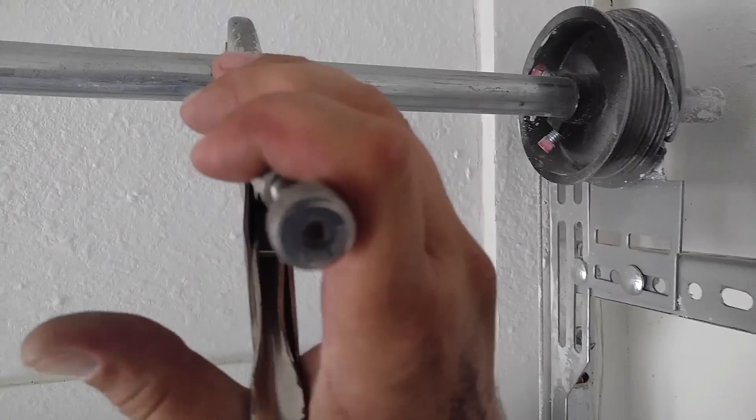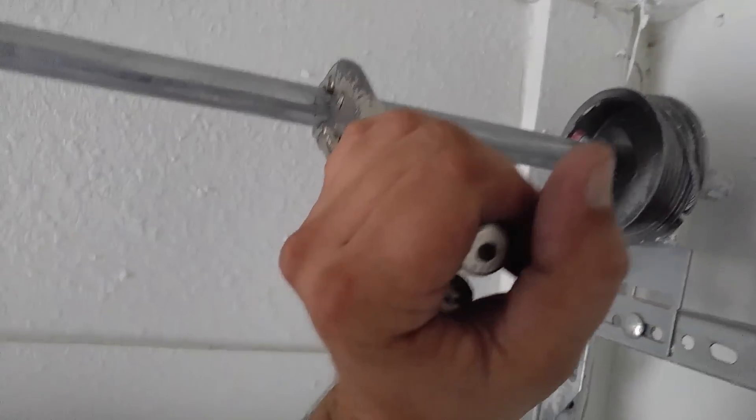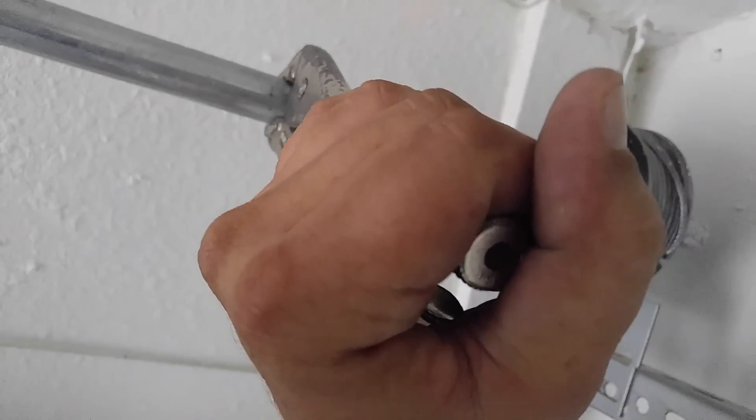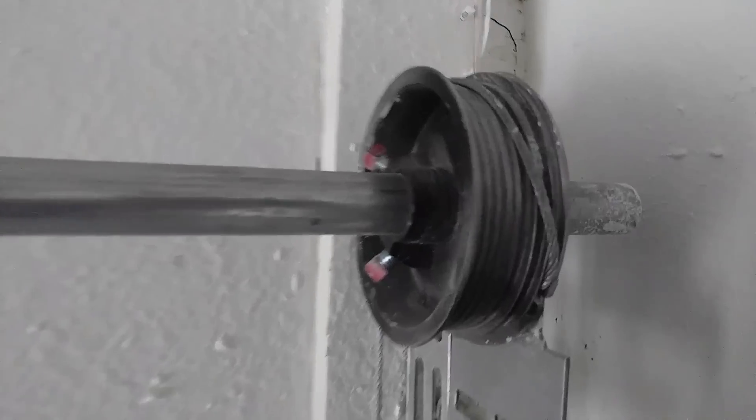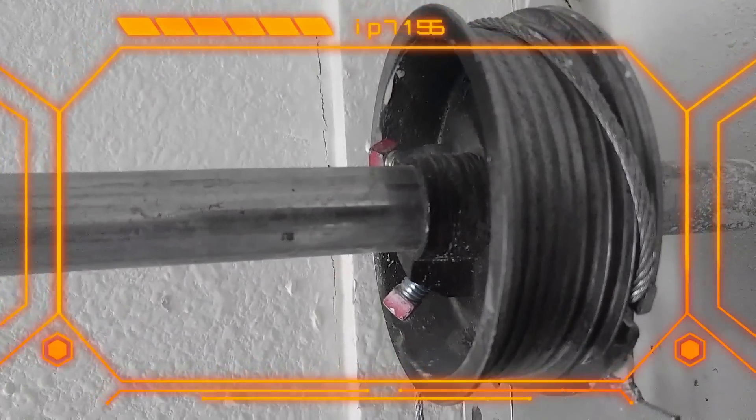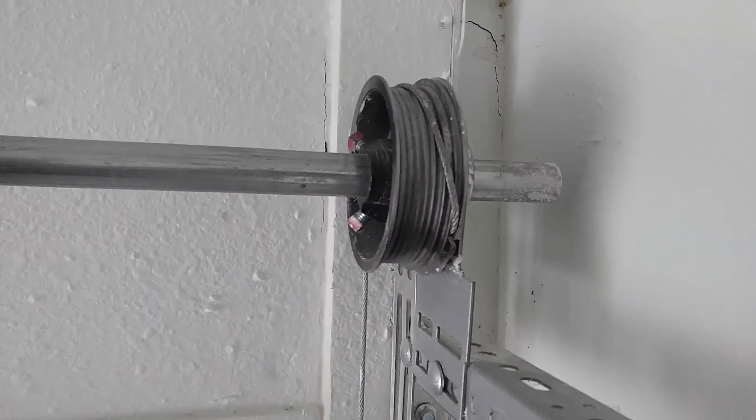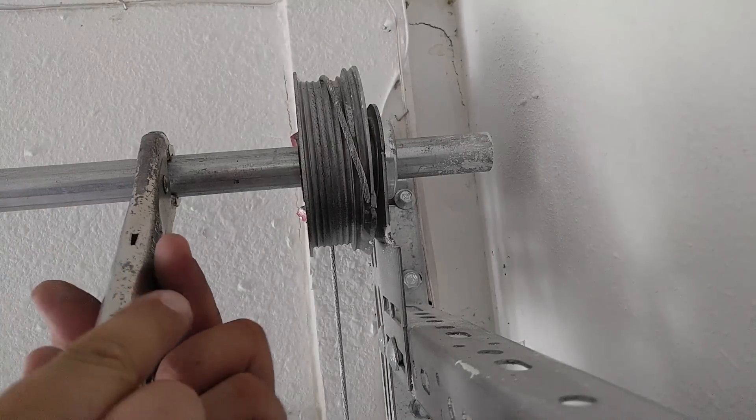You're just gonna lock it to the pipe right there. Once you lock it on there, you can push upward. Now it's gonna take a little bit of effort to do that, but once you do that, see what's happening? That cable is getting loose.